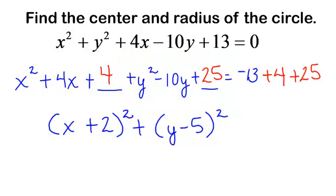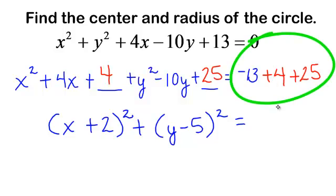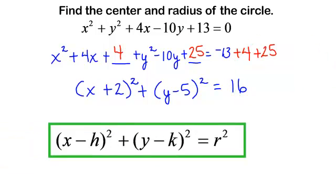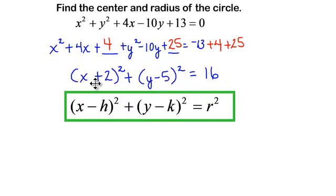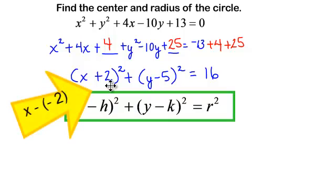On the right side, negative 13 plus 4 plus 25 is 16. And so now I should very easily be able to tell you the center and the radius of this circle. Now that is x plus 2, which is x minus minus 2, y minus 5. On the right, we have 16.